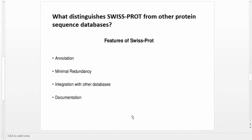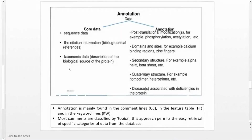What distinguishes Swiss-Prot from other protein sequence databases? There are four features: first, annotation; second, minimal redundancy; third, integration with other databases; and fourth, documentation. Regarding annotation — to be useful to the majority of users, a protein sequence database should contain as much data as possible on each protein it describes. In Swiss-Prot, the data is divided into two classes: core data and annotation data.